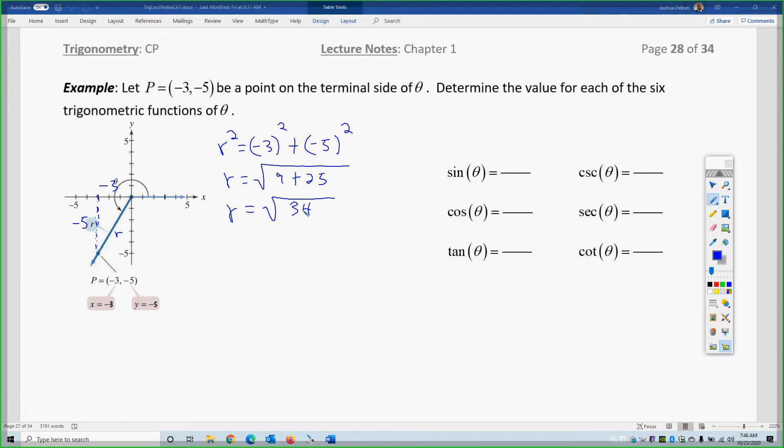If we use the trig definitions from the prior page, sine is y over r. Also, if you look at the triangle, this is the angle we're evaluating here, and if you do opposite over hypotenuse, it's also negative 5 over root 34.